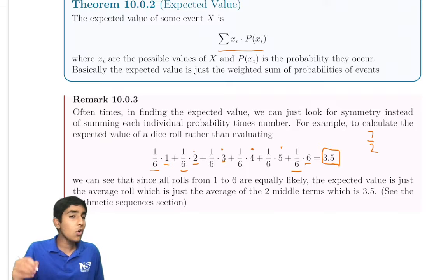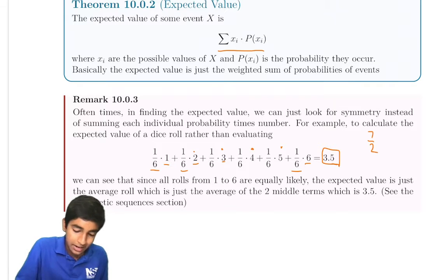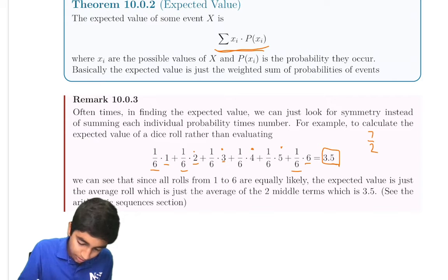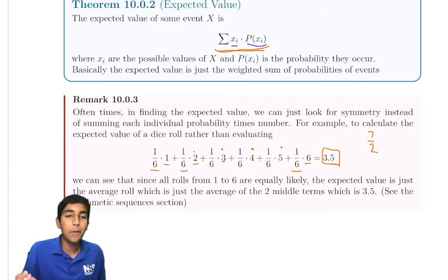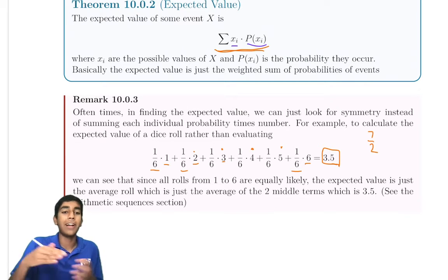So you don't always have to do this giant sum. And now that we understand what it means, what this is saying is xi is the value and P(xi) is the probability. And we're just summing this product over all such values.